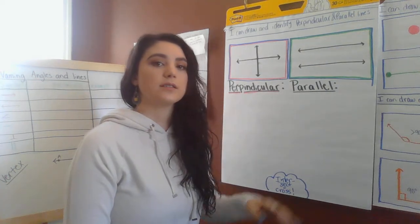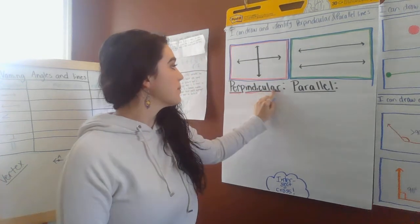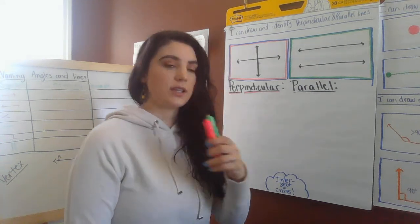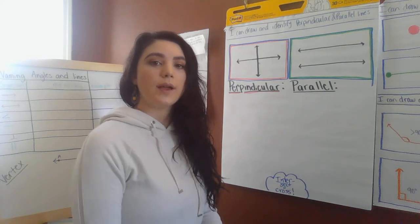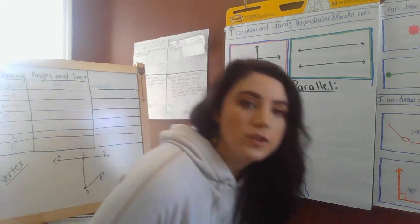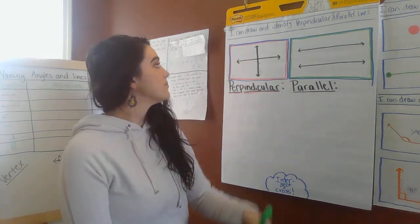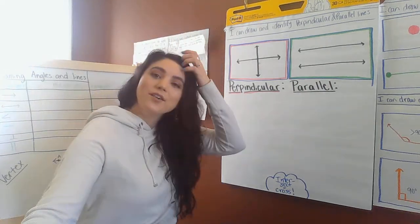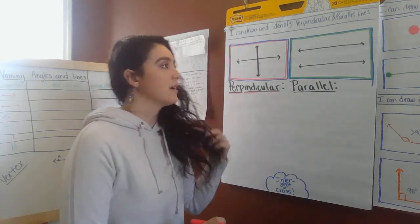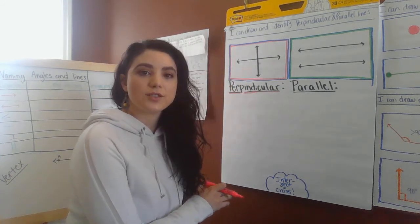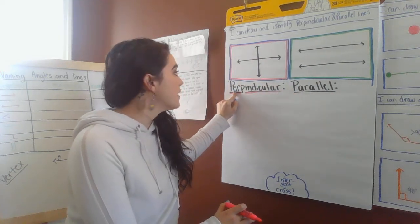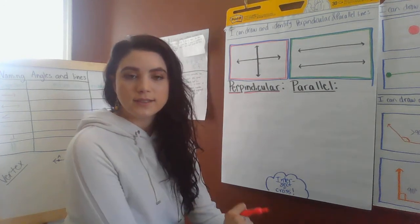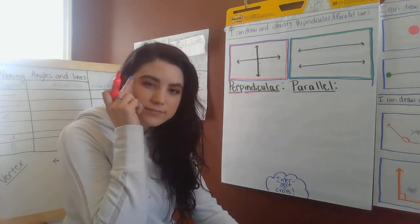So we have perpendicular and we have parallel and I have two pictures right here to represent them. This side says perpendicular, this side says parallel. I'm going to define them for you in matching colors — perpendicular is in pink, parallel is in green. So a perpendicular line — if you look at the picture, what do you notice? Take a moment to think to yourself. How could you describe these lines? If I'm telling you that they are called perpendicular, what do you notice about them? Think.